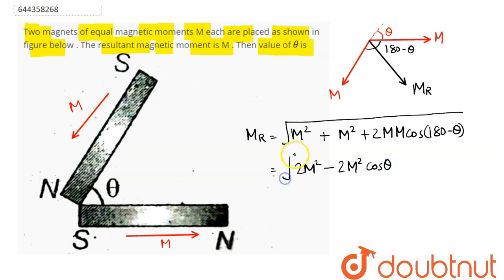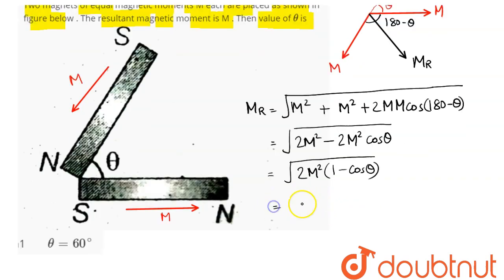Taking 2M square as common, this comes as 1 minus cos theta. And as we know, 1 minus cos theta can be written as 2 sin square theta by 2. So this comes as 2 sin square theta by 2. Now square root of this gives us...